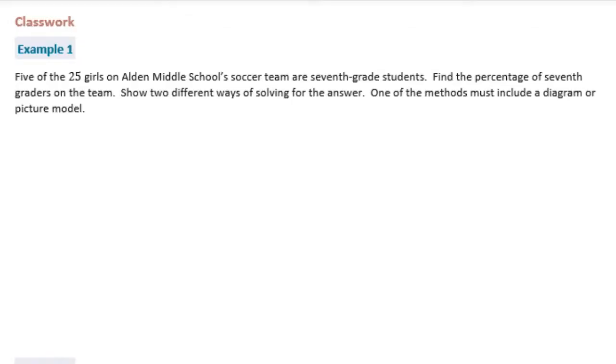Alright, so it says that 5 of the 25 are 7th grade students. We want to know what percent that would be on the team. So my first method, I'm just going to use fractions. And I'm going to make this out of 100 because percents are out of 100. So I can make equivalent fractions. 25 times 4 is 100, so I'm going to do the same thing to 5. And 5 times 4 is 20, meaning that 20 hundredths is equal to 20%. So 20% of the girls are 7th grade students.